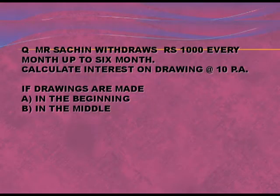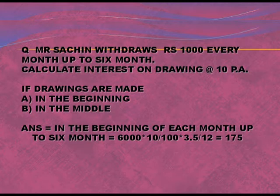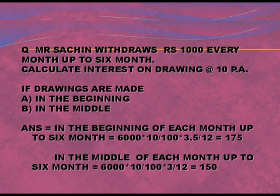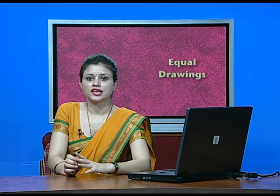Next question: Mr. Sachin withdraws 1,000 every month for six months. For six months the total drawing is 6,000. At the beginning: 6,000 × 10/100 × 3.5/12. At the middle: 6,000 × 10/100 × 3/12, which equals 150. One important point: if the rate is given as 10% or 12% but 'per annum' is not mentioned, we will not consider the average period and will simply calculate the drawing as shown.